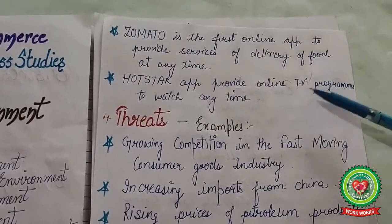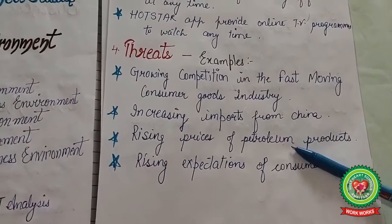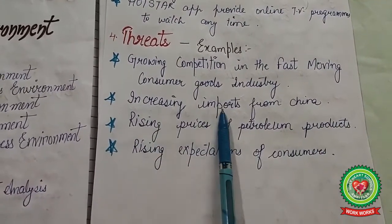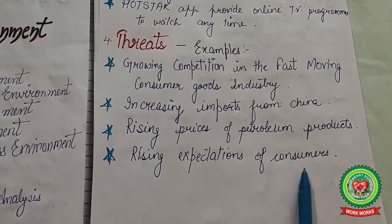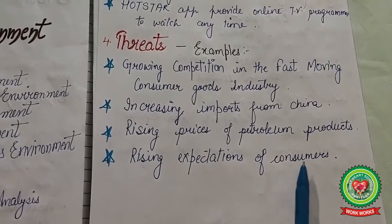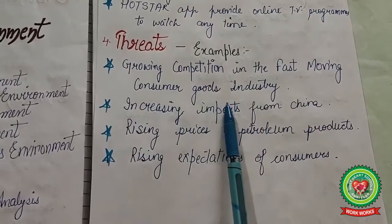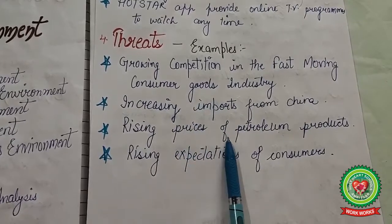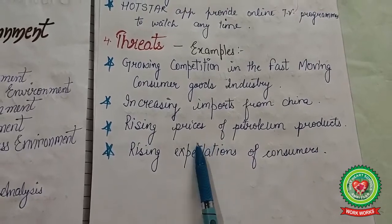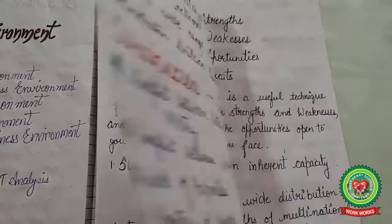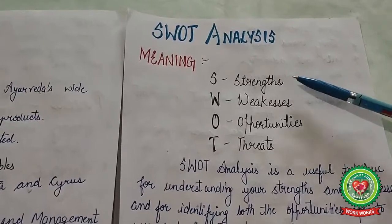The next key term is threats. For example, increasing imports from China, rising prices of petroleum products, rising consumer expectations, and growing competition in the fast-moving consumer goods industry — these create unfavorable conditions for success in the market. These are known as threats. So in SWOT: S denotes Strengths, W for Weaknesses, O for Opportunities, and T for Threats.